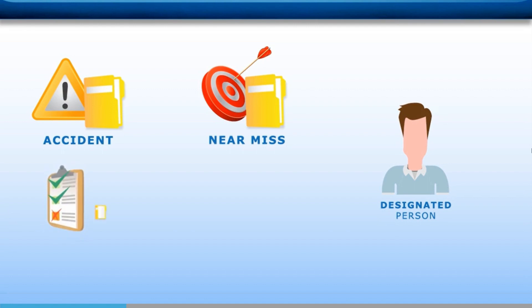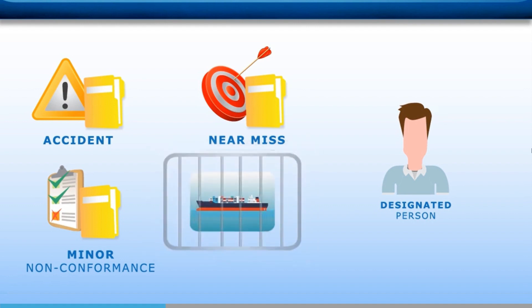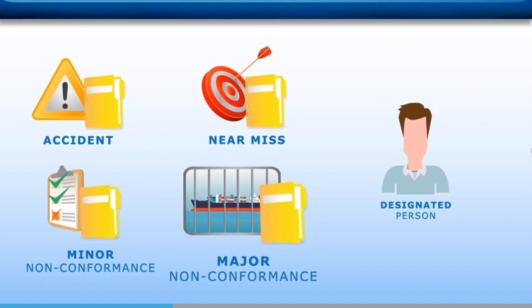Non-conformities must also be reported to the designated person. According to the ISM code, when objective evidence indicates non-fulfilment of a specific requirement stated by the safety management system, a situation of non-conformity is considered to have occurred. A minor non-conformity indicates a need to fix the SMS, but a major non-conformity indicates a serious breakdown and is grounds for the withdrawal of the ship's ISM certificate and the detention of the ship.